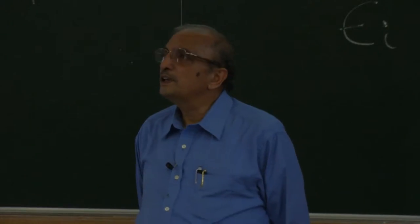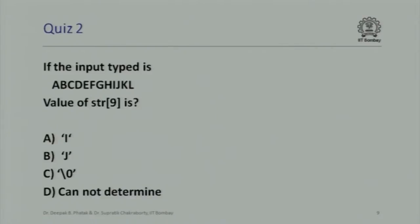The second question is merely a variation. The input string is now a, b, c, d, e, f, g, h, i, j, k, l — then press return. Same program is executed. The value of str[9] is either i, j, backslash-0, or cannot determine.